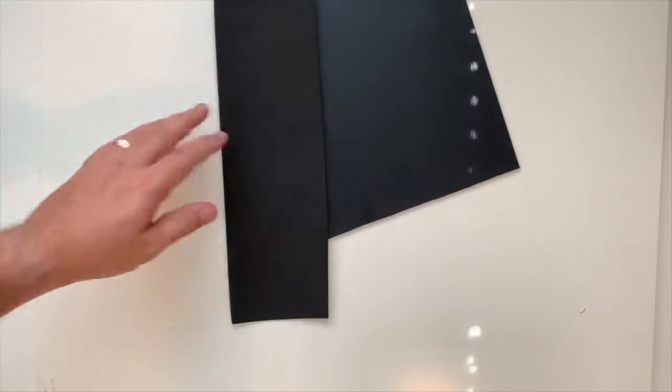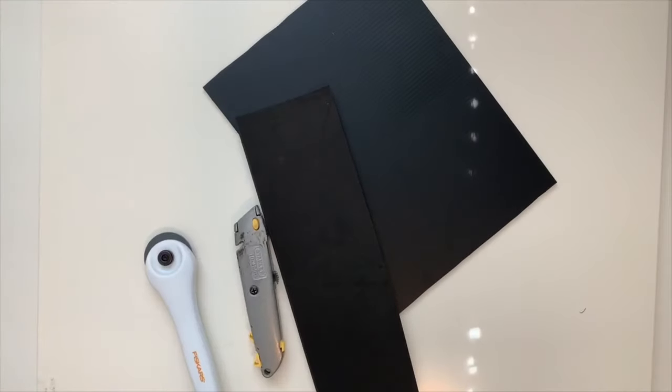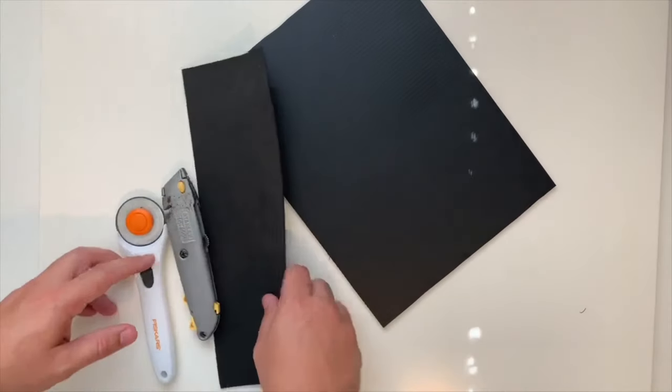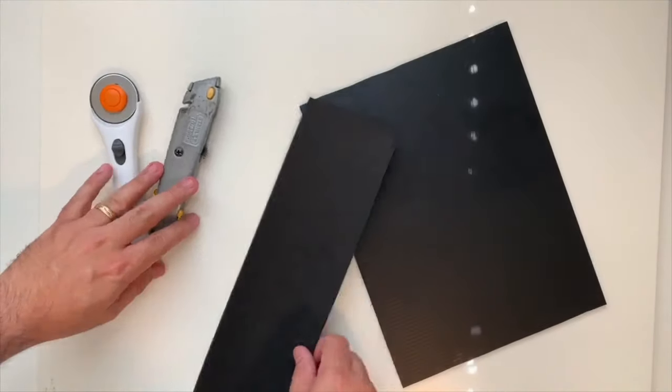Now we want to cut our foam and corrugated plastic. Make sure you use different tools. In this case I use a rotary cutter for fabric and stuff, and also a blade.